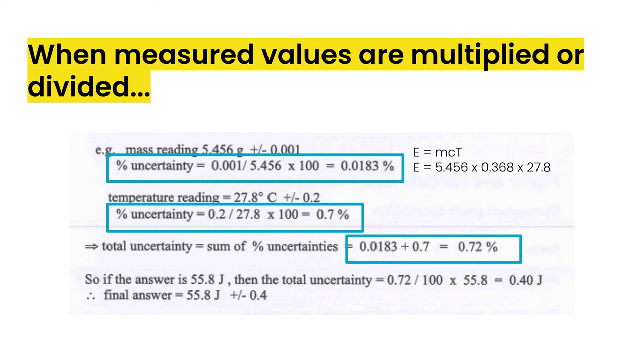So to do that here, what we're going to do is take our percent 0.72 divided by 100 to get it back into decimal form. And then we multiply it by our final calculated answer of 55.8 to give us 0.4 as our absolute uncertainty. So our final answer then would be 55.8 plus or minus 0.4 joules for this particular calculation.